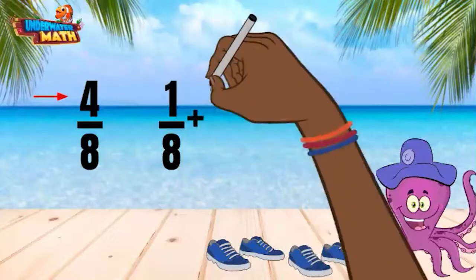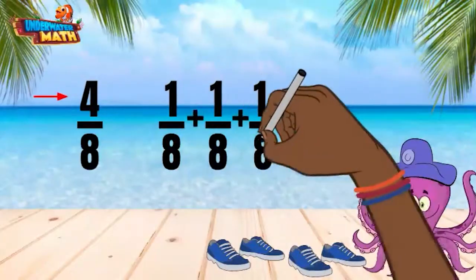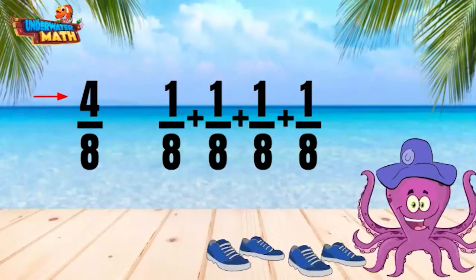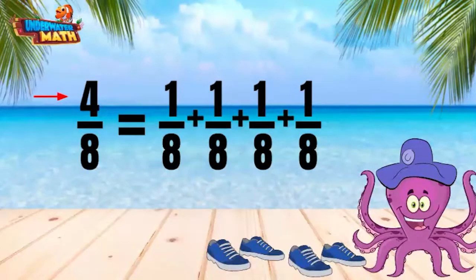When adding fractions, you add the numerators together. The denominator stays the same. 1 plus 1 plus 1 plus 1 is equal to 4, and our denominator is 8.